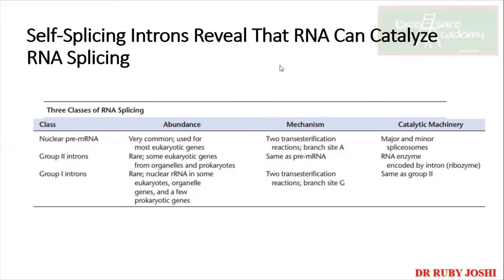Self-splicing introns reveal that RNA can catalyze RNA splicing. These are different types of intron splicing mechanisms where the RNA itself catalyzes its removal. We just saw splicing using spliceosome machinery; now we'll see that RNA can itself catalyze the splicing. There are three classes: nuclear pre-mRNA splicing using the spliceosome via transesterification reactions with a branch A site.